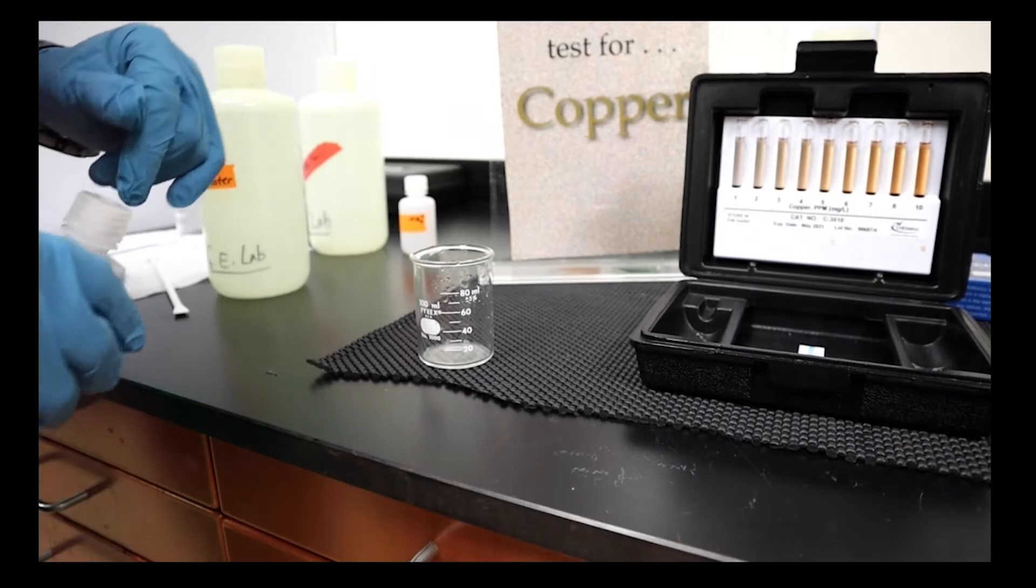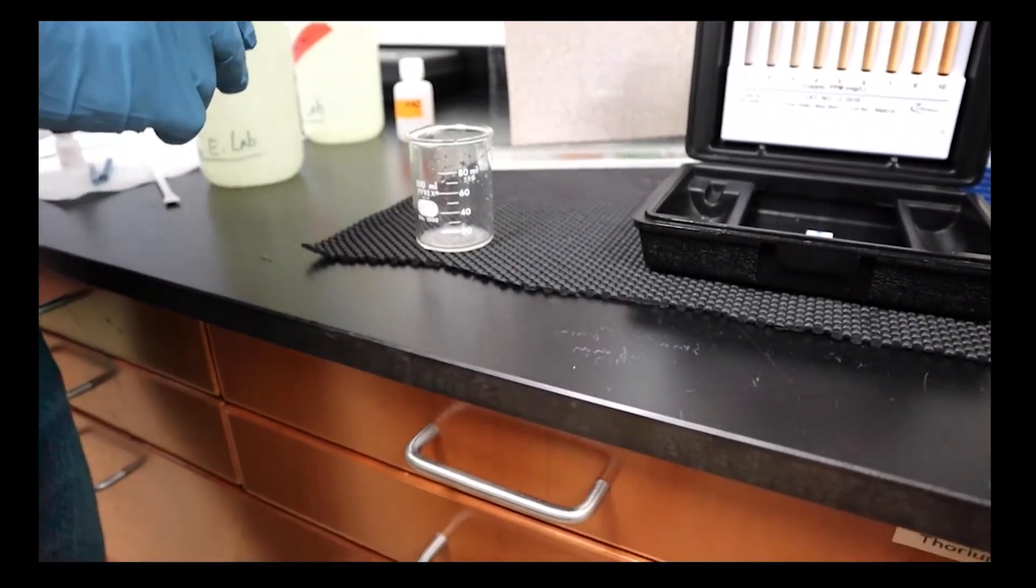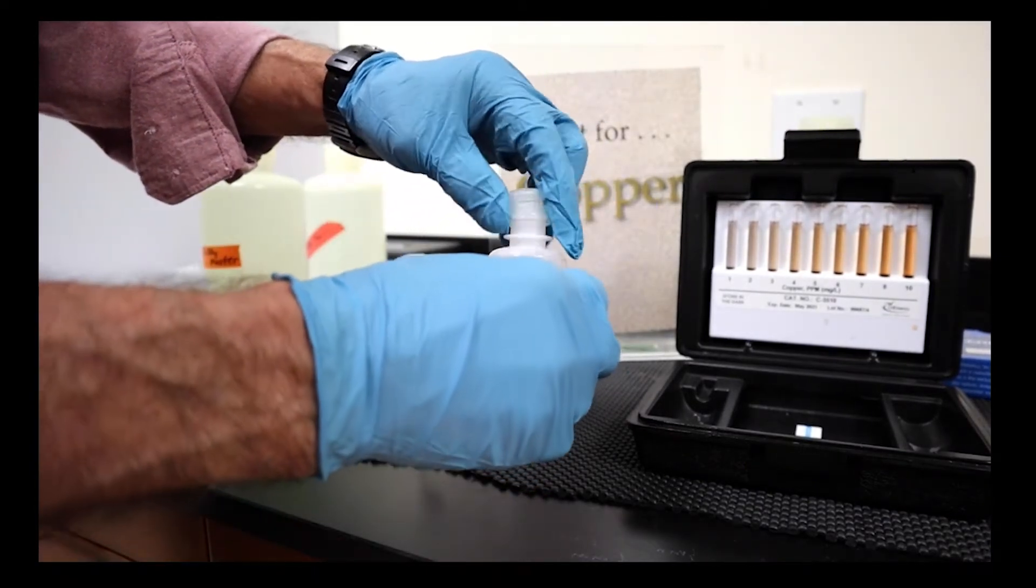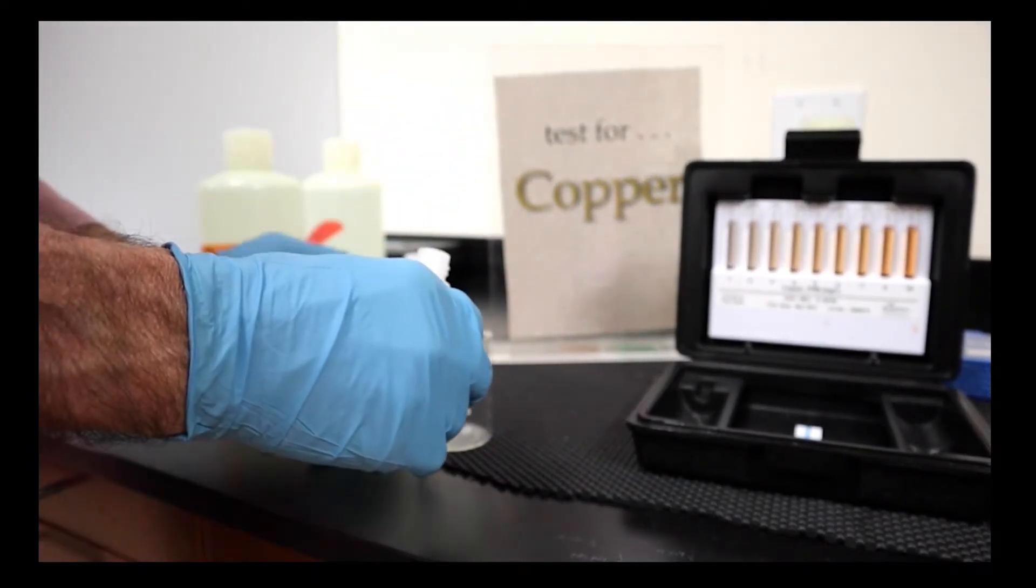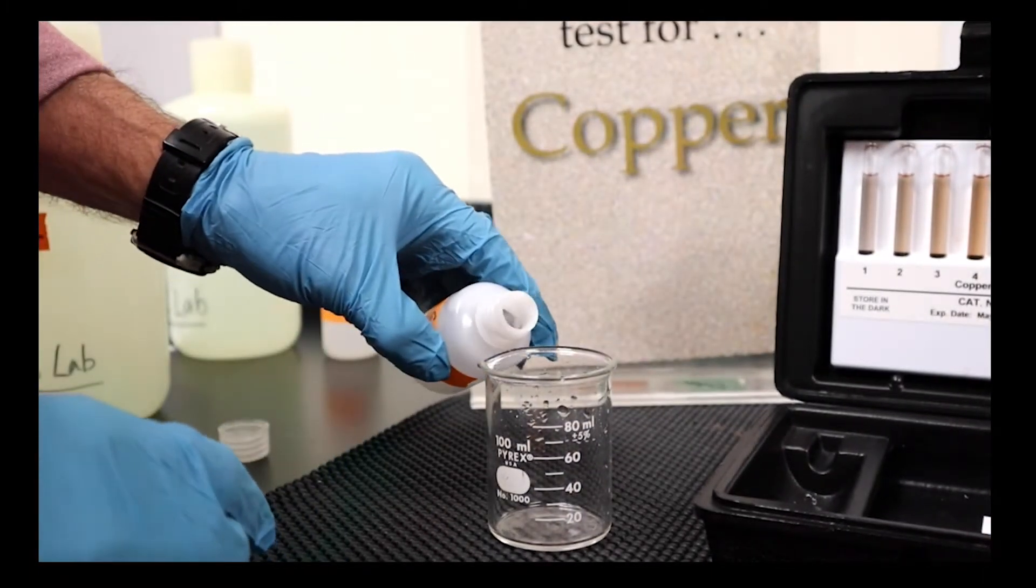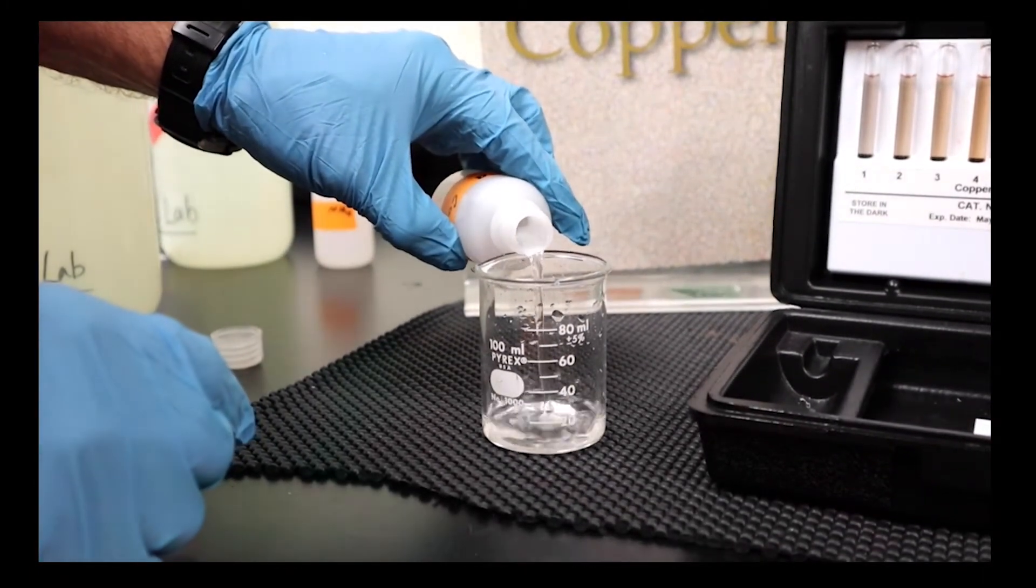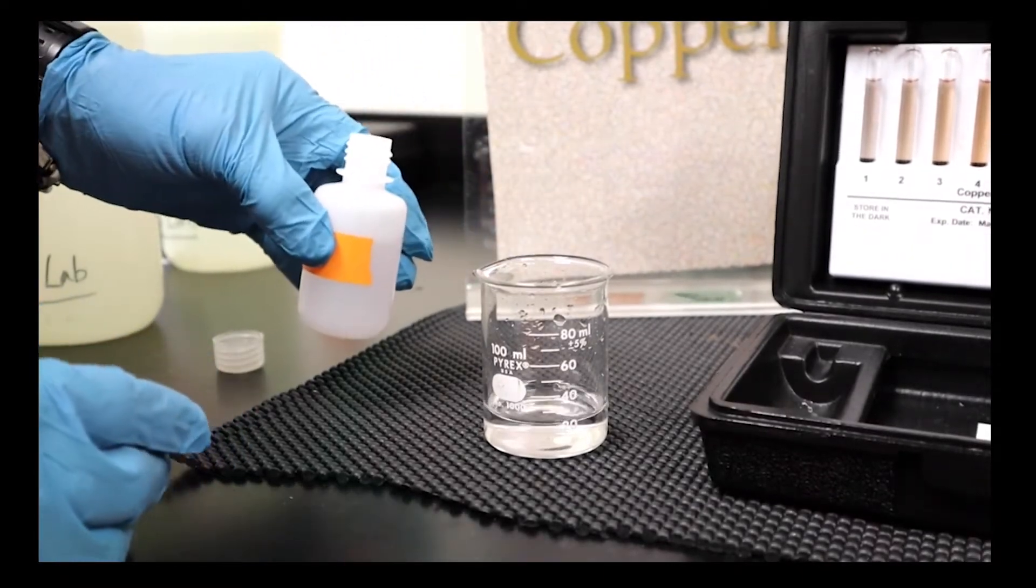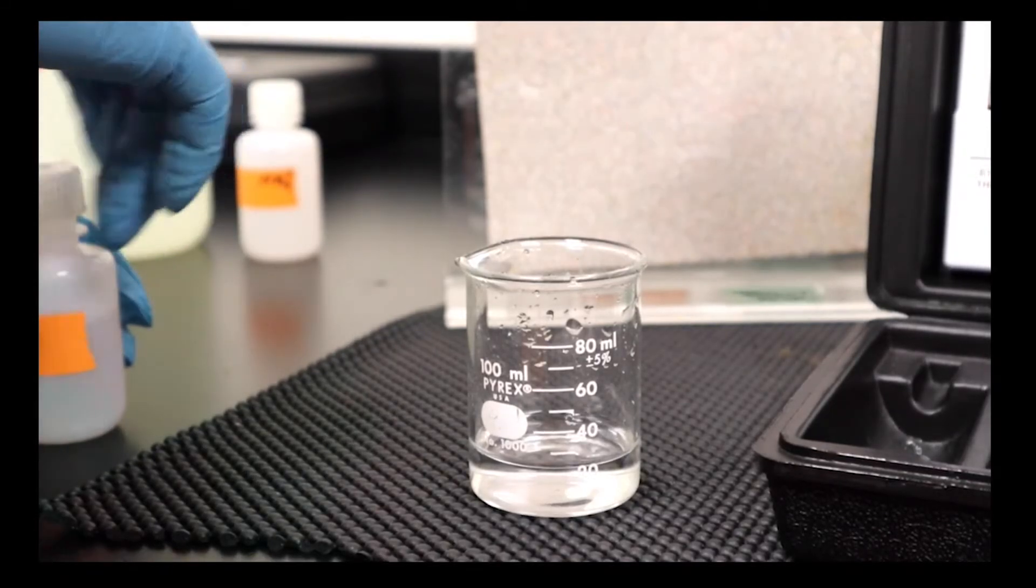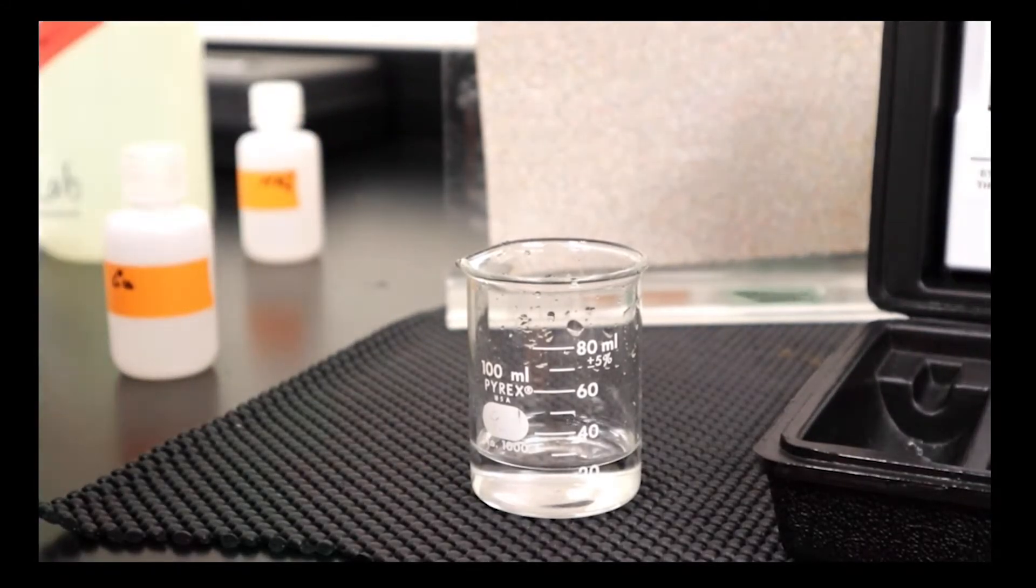Let's look at our second contaminant, and that will be copper. This time we're going to start with the B sample. We'll add a bit to the beaker, try to get right around 25 cc's in there. We're at about 25 cc's.